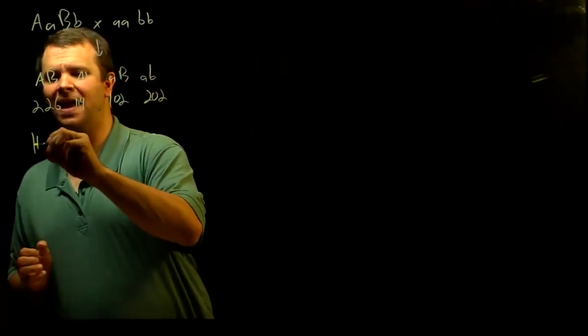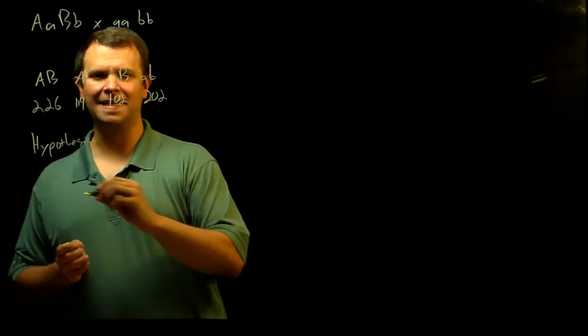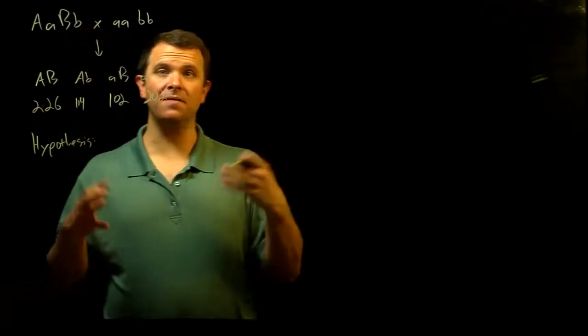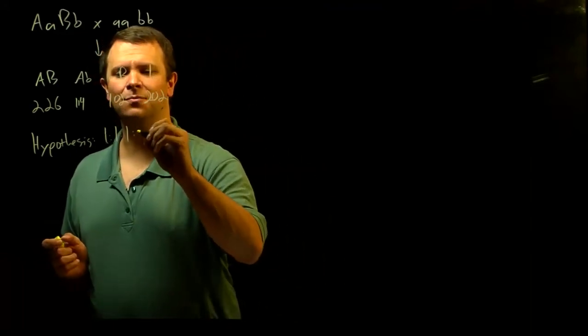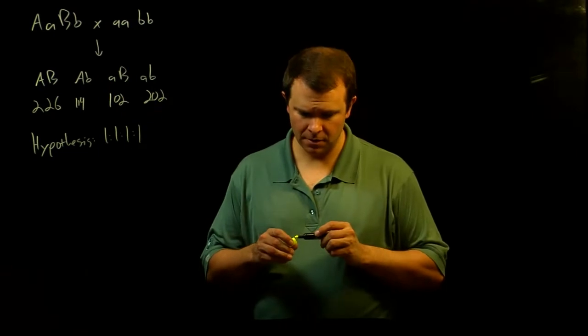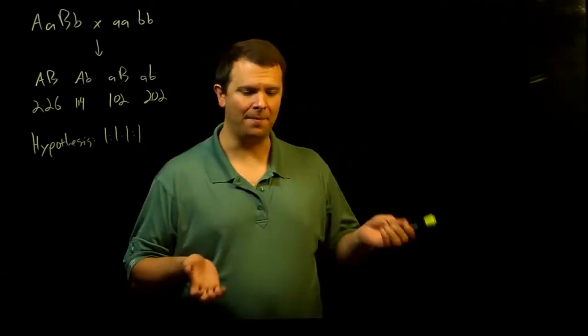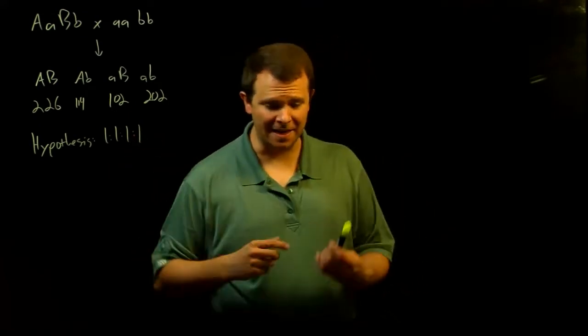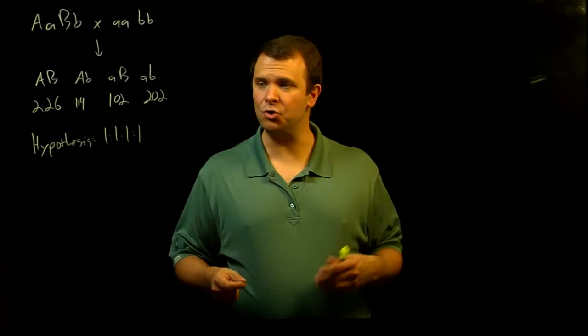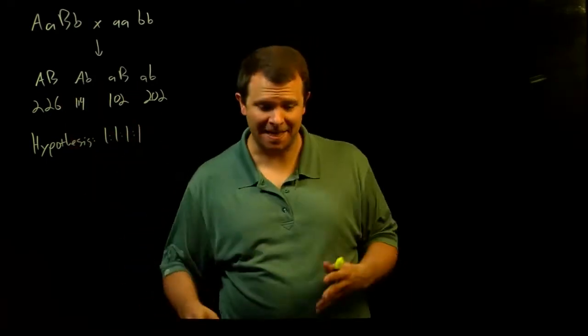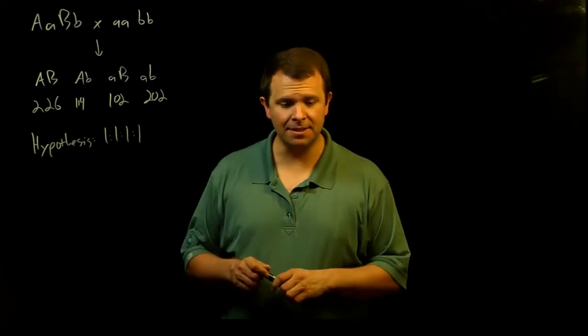And so the question is, if we have a hypothesis that the actual ratio, if these are unlinked, is a one-to-one-to-one-to-one ratio, does this data fit this hypothesis? Well, whenever you have a genetic hypothesis that predicts some ratio of offspring and you want to see if your data fits this hypothesis, the first thing you should think of is a chi-square test.